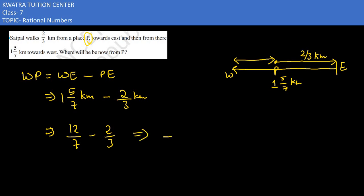Now take the LCM of it. It would become 21. Multiply the first term with 3, second with 7. So it would be 36 minus 40. So it would be 2 here, 2 here. And you would get 22 by 21 km.